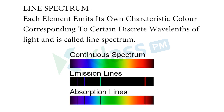What is the line spectrum? Each element emits its own characteristic color corresponding to certain discrete wavelengths of light — that is called the line spectrum. Based on the wavelength, each element emits its own characteristic color, and that is nothing but a line spectrum.